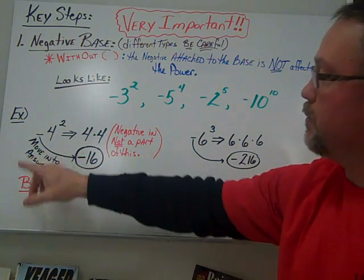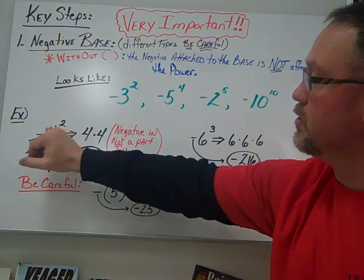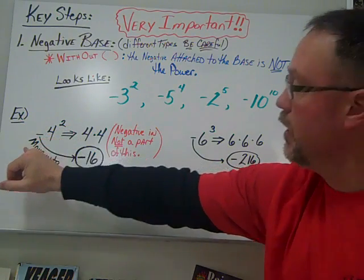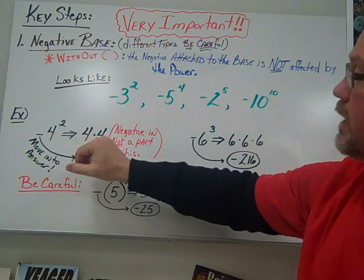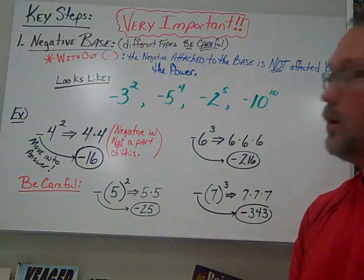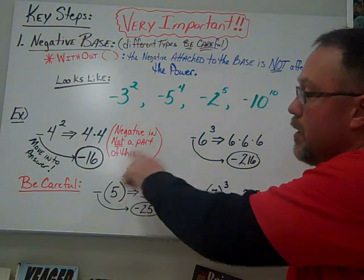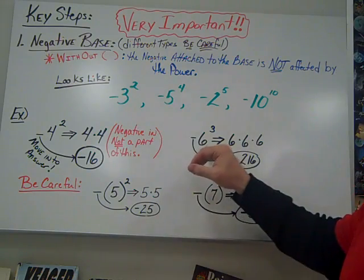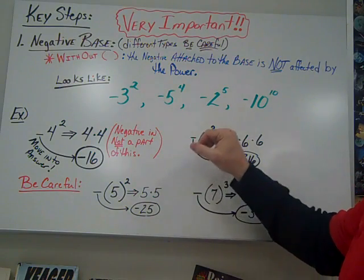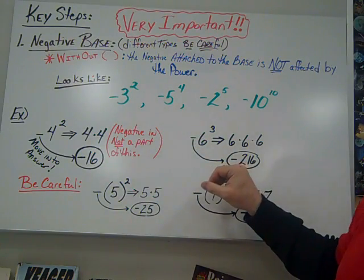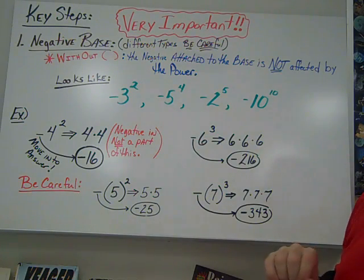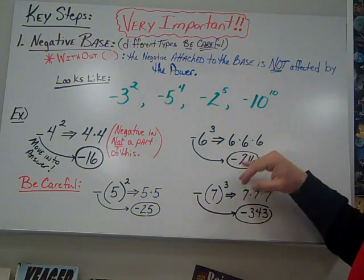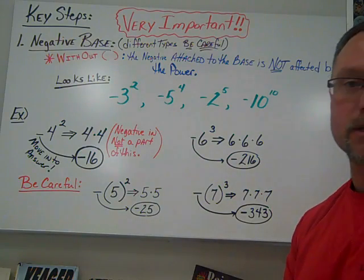So in our example, we have negative four squared. The square does not affect the negative. So we're just going to move that negative right into the answer. We have four times four gives us 16. Again, negative is not a part of this. Another example would be negative six cubed. Bring our negative right into the answer. Six times six times six. Again, the power of three tells us three times. That gives us 216.